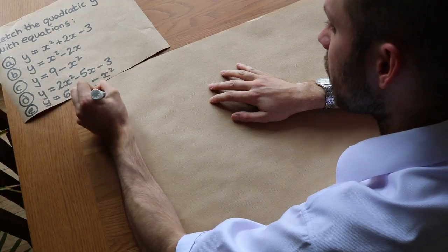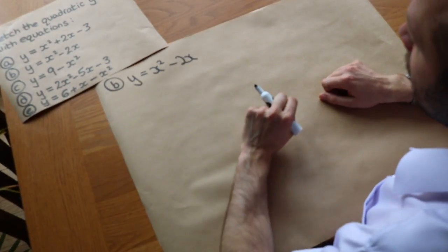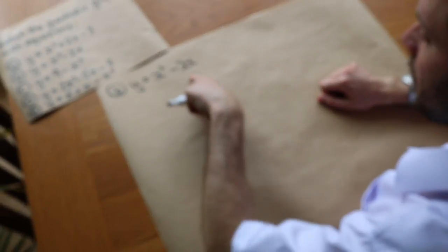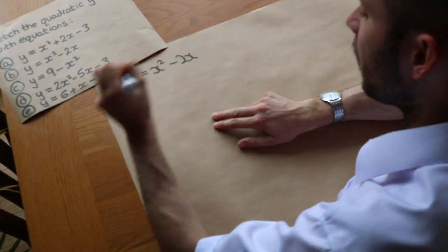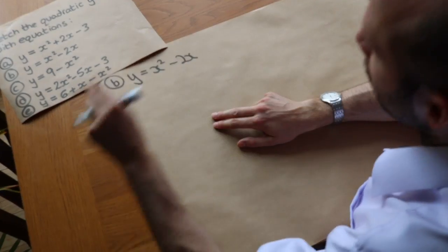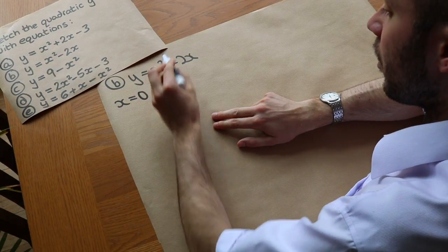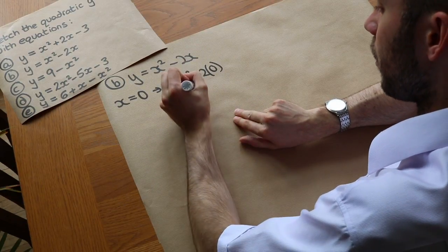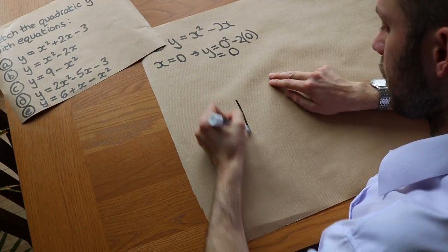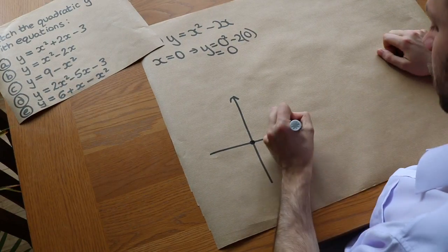Let's do another example: y equals x squared minus 2x. Again, it's 1x squared — a positive number — so we know it's going to be a smiley face shape. For the y-intercept, when x equals 0, y equals 0 squared minus 2 times 0, which equals 0. So the graph goes through the point (0, 0), the origin.